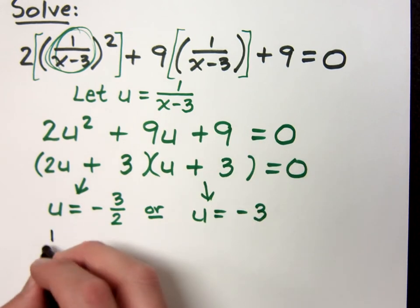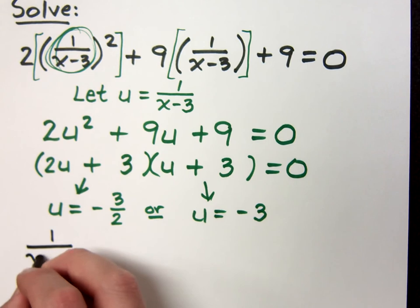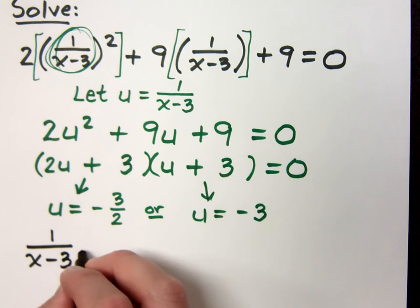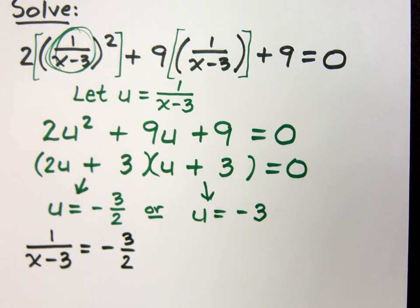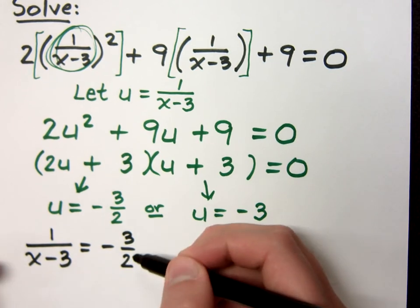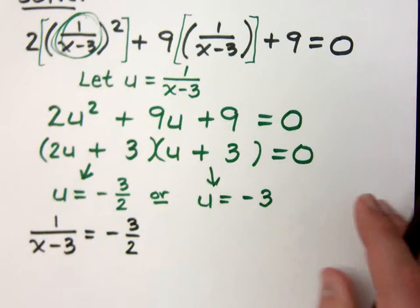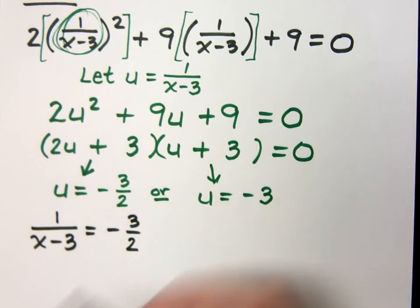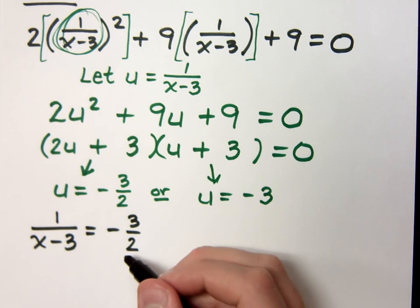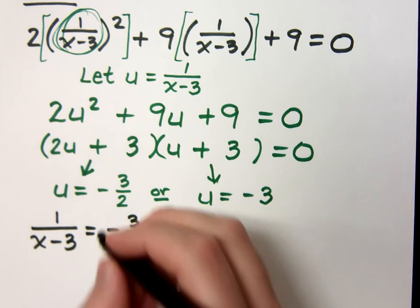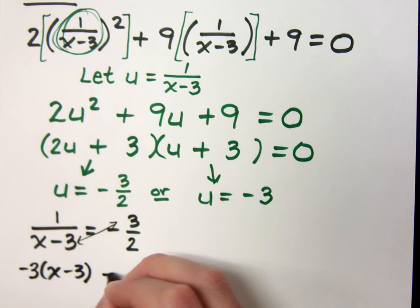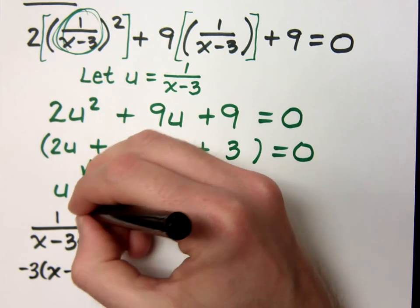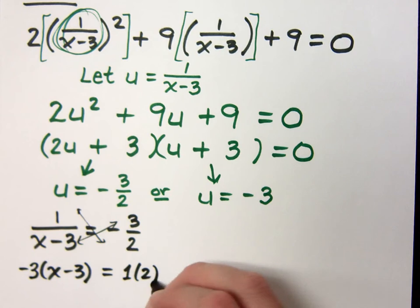So instead of u, I'm going to write 1 over x minus 3 is equal to negative 3 halves. And in this guy, I now have an equation that I can solve. This is a rational equation. It's a proportion. So it tells me the cross products are equal, which means the cross product this way of negative 3 times x minus 3 is equal to the other cross product here, which is 1 times 2.